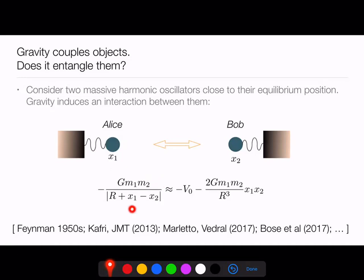In the Newtonian limit, you can do a small position expansion about the overall distance r and get a dipole-type interaction term that goes as one over distance cubed times the two harmonic oscillator positions. That is an entangling interaction — it would produce entanglement between the two masses. Here I'm assuming what we might call the linearized quantum gravity limit. The question of which degrees of freedom are involved is actually gauge-dependent.